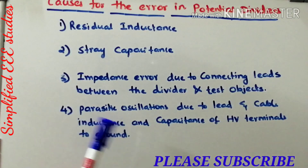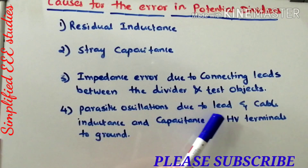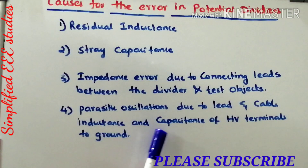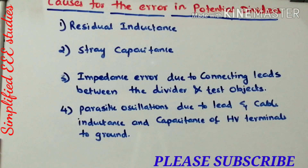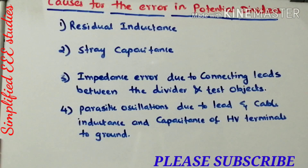The fourth reason is parasitic oscillations due to lead and cable inductance and capacitance of HV terminals to ground. These parasitic oscillations — a sort of vibration — will be causing errors in the case of potential divider measurement. These are the four major reasons which will be causing errors in potential divider measurement. While doing design or calibration, you need to take care of those four errors.